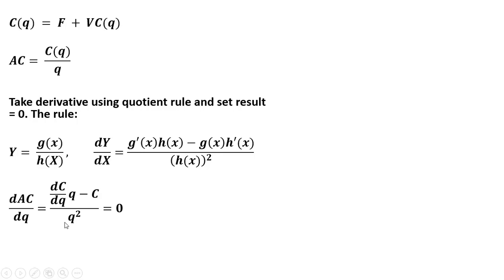So you'll note here I squared everything in the denominator. Then I took the derivative of what's in the numerator. So the derivative of the cost function with respect to quantity. That's what I have here.